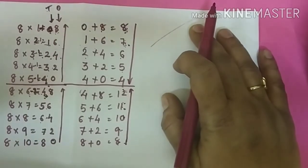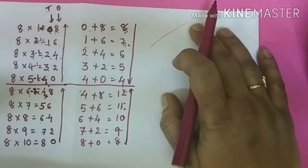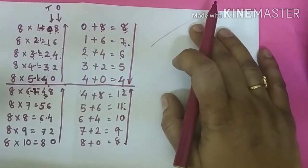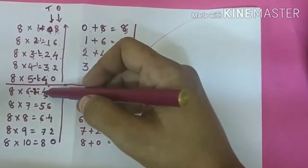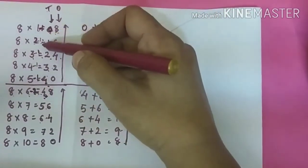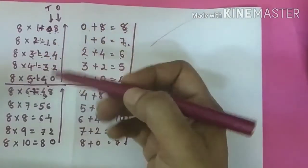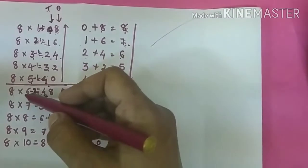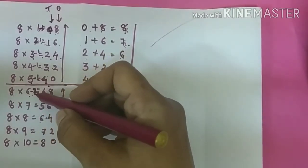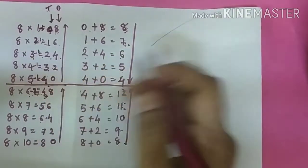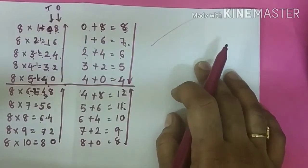See friends, one more thing you should know about this 8 times table is that here you will get your tens place value by just subtracting 1 from these numbers. 1, 2, 3, 4, 5. And after 8 times 5, means from 8 times 6, you have to subtract 2. Then you will get your tens place value.